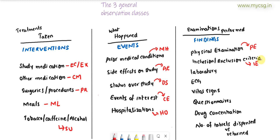To assess the safety or efficacy of the drug, we take blood or urine samples and analyze them in the laboratory. All test results from those samples are stored in a dataset called LB, which stands for laboratory analysis results. We also perform ECG — electrocardiogram — to assess any cardiovascular abnormalities, and those findings are stored in a dataset called EG, which stands for electrocardiogram test results.